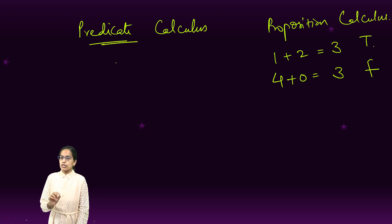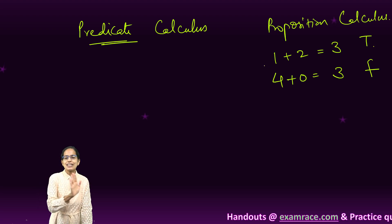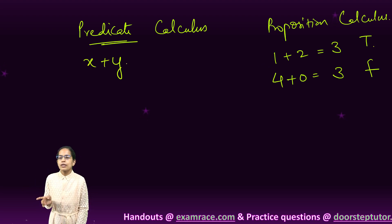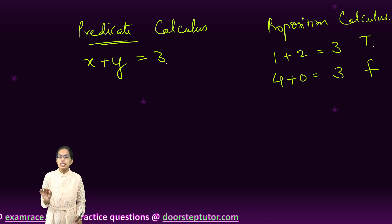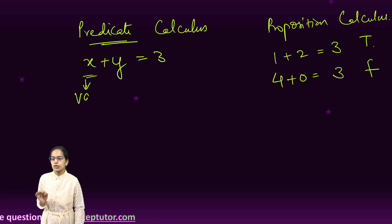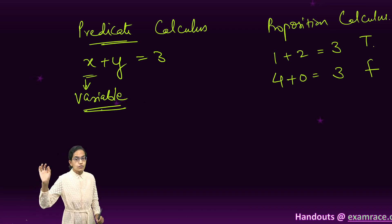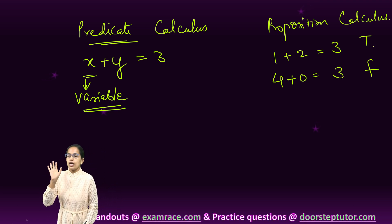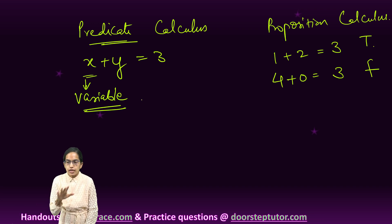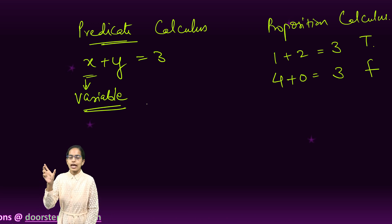In predicate calculus we do not use constants. For example, writing x plus y equals 3 is predicate calculus — here we use variables as in algebra, not constants. When a constant value is assigned, we can determine true or false, but when variables are written, we call it predicate calculus.